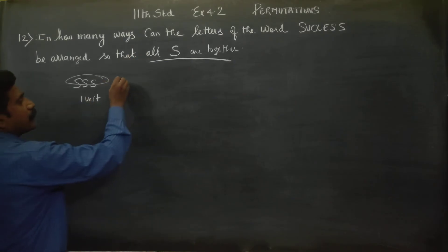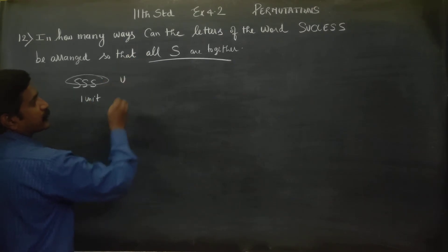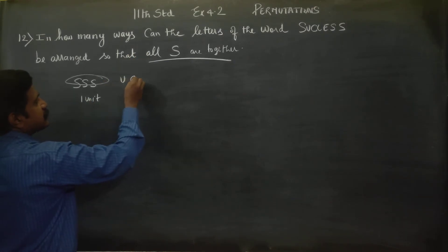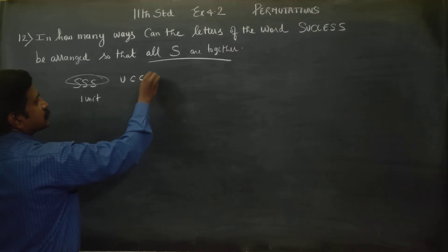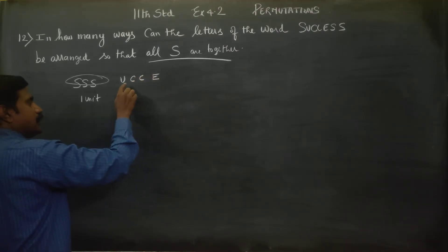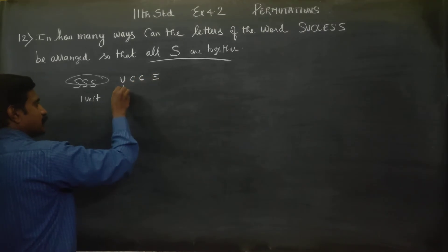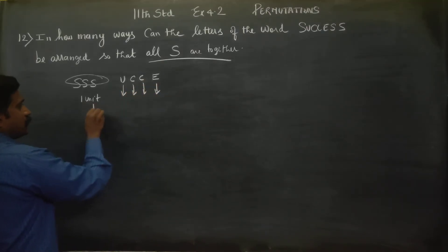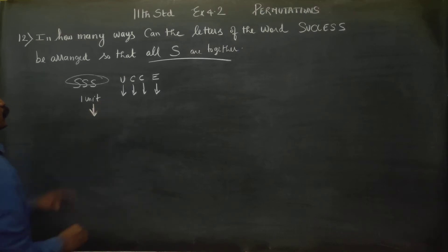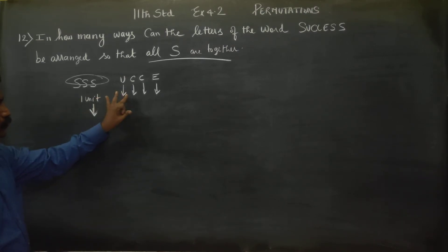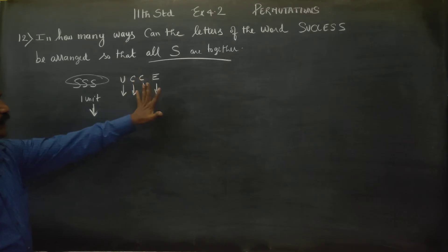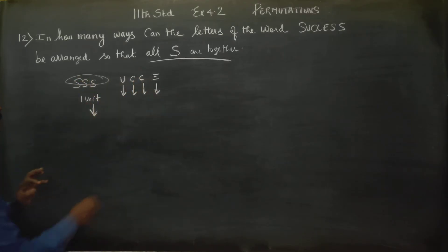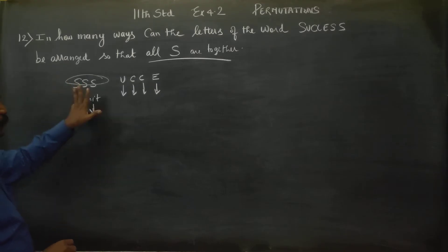The remaining letters are U, C, C, and E. So counting: 1, 2, 3, 4, 5 — the triple S forms 1 bundle. Triple S is 1 bundle, giving us 5 total units.